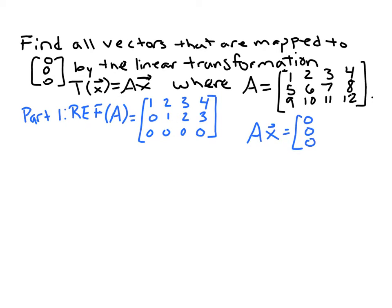In a previous example video, we solved a similar problem, except we had non-zero entries in this vector over here. So since we already set up an augmented matrix once with this matrix A, here we could set up a new augmented matrix with the matrix A here and then a column of zeros here.